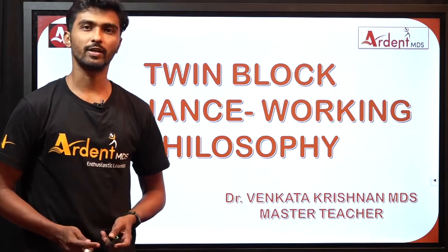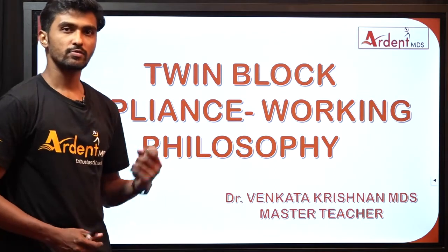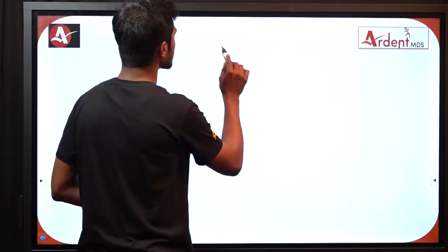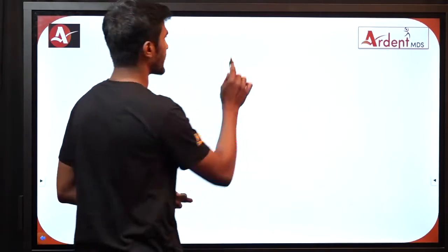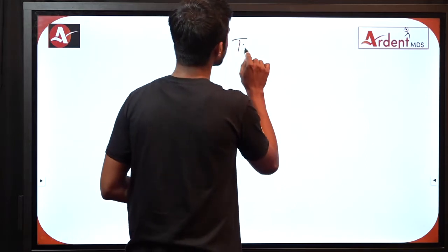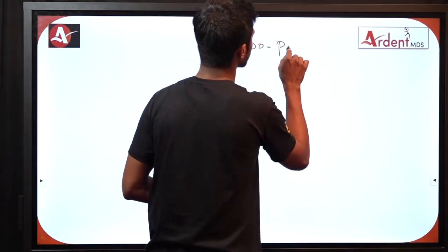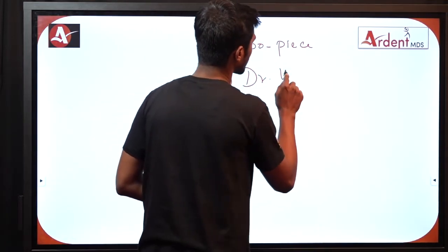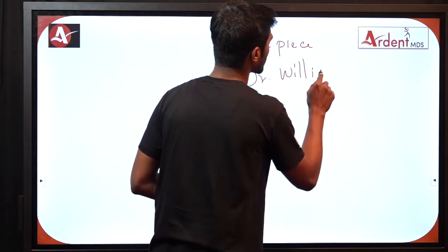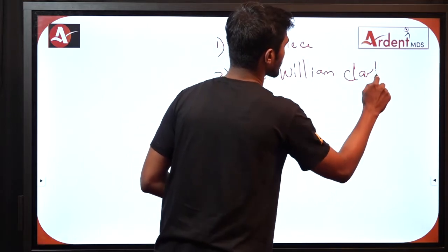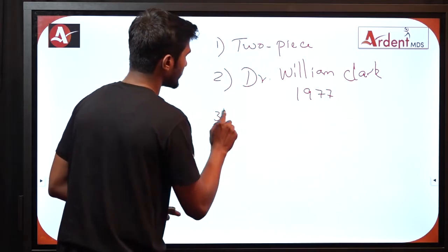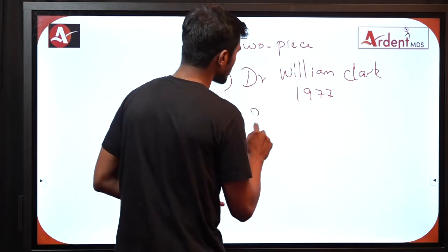Hi LDS students, a warm welcome to Allant MDS. The topic we are going to see today is about a functional appliance called twin block. Twin block is a functional appliance which corrects the position of the mandible and it is a two-piece appliance, given by Dr. William Clark in the year 1977. Dr. William Clark hails from Scotland.